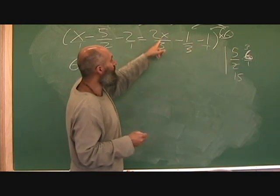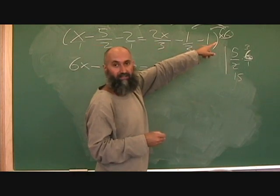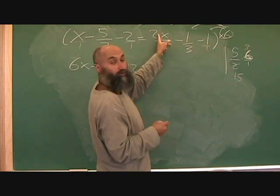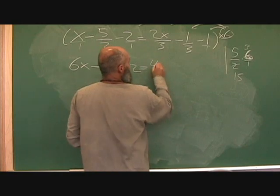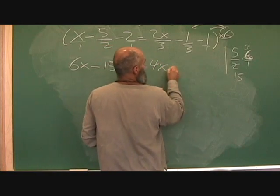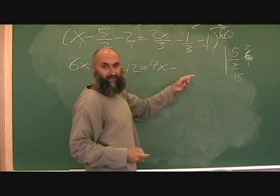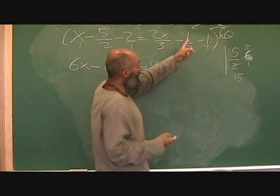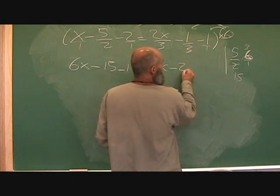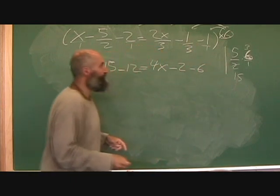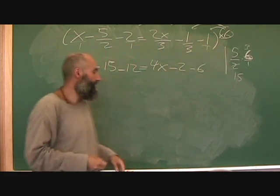Over here, two x over three: three reduces the six down to two, so it's only a two multiplying this term - that gives four x. Minus - three reduces the six down to two, so it's only a two multiplying this. Two minus six, because it's just one times six.